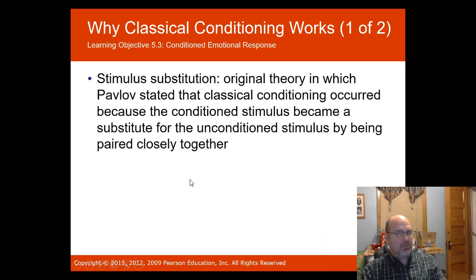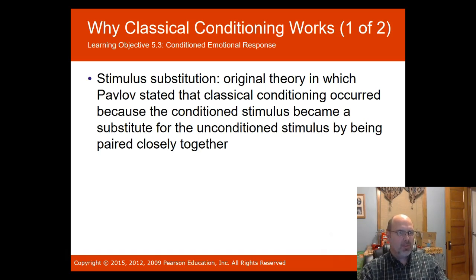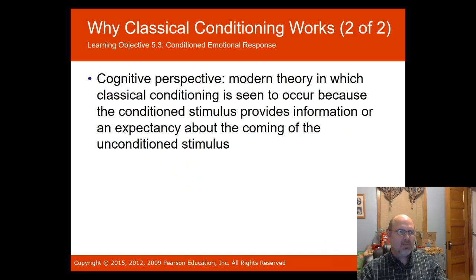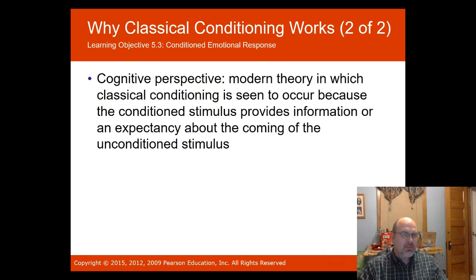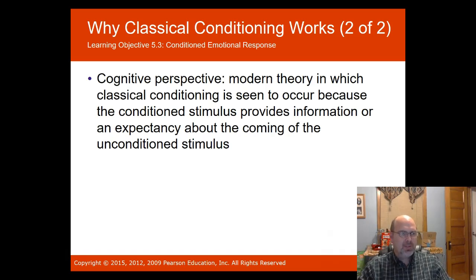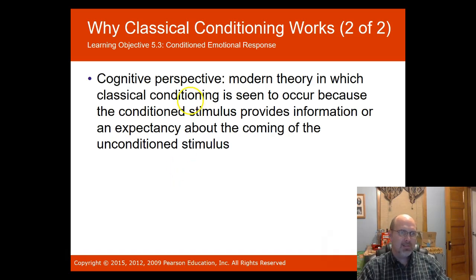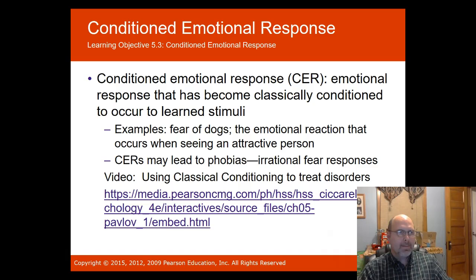Stimulus substitution was Pavlov's original theory — classical conditioning occurs because the conditioned stimulus becomes a substitute for the unconditioned stimulus through close pairing. The modern cognitive perspective holds that classical conditioning works because the conditioned stimulus provides information or an expectancy about the coming unconditioned stimulus. The conditioned stimulus must be paired before the unconditioned stimulus for the conditioned response to develop.